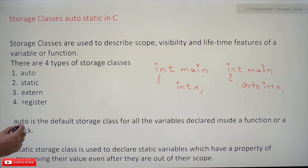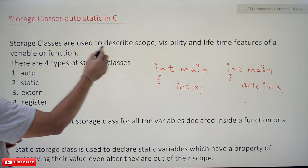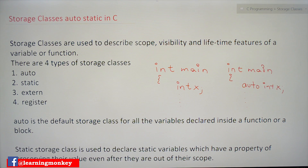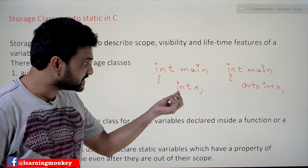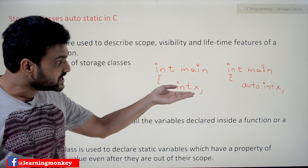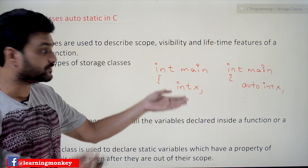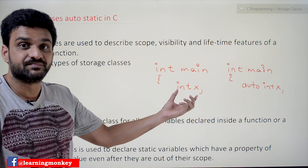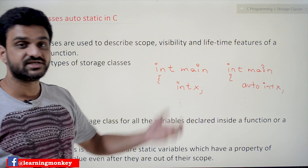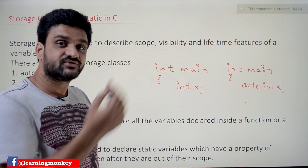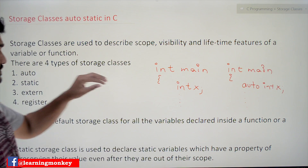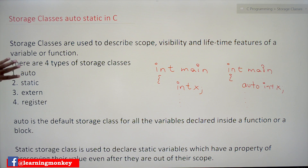Coming to this class: storage classes are used to describe the scope, visibility, and lifetime of a variable or a function. For example, if you declare a variable as int X, it has block scope — within the existence of main, that variable has its lifetime. If you come out of that function, the existence of that variable will not be there. There are four different types of storage classes: auto, static, external, and register.